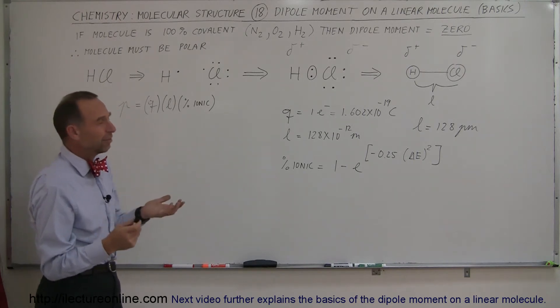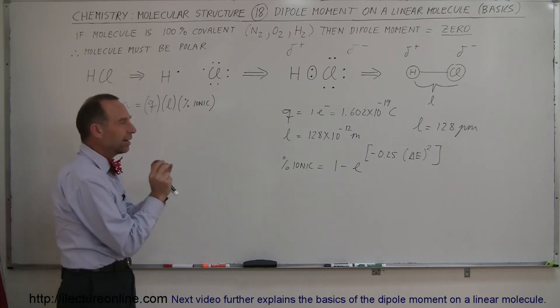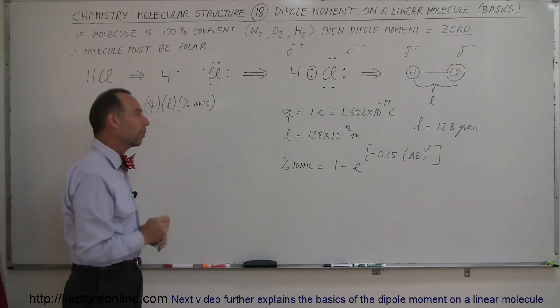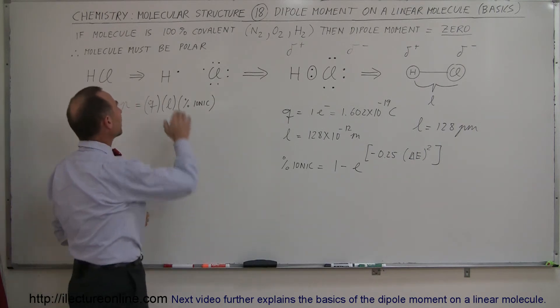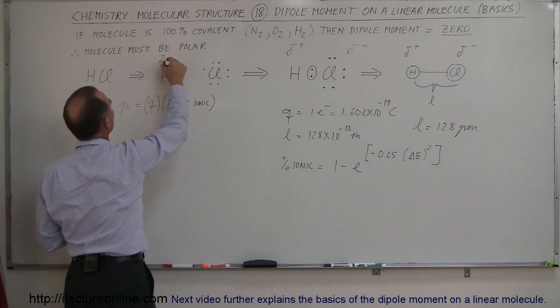Remember, electronegativity is also not an absolute number. When we come up with the numbers, those are calculated values that are not precise. So we're not dealing with a precise science here, but we're getting something that will be pretty close. Now, what is the difference in electronegativity between hydrogen and chlorine?